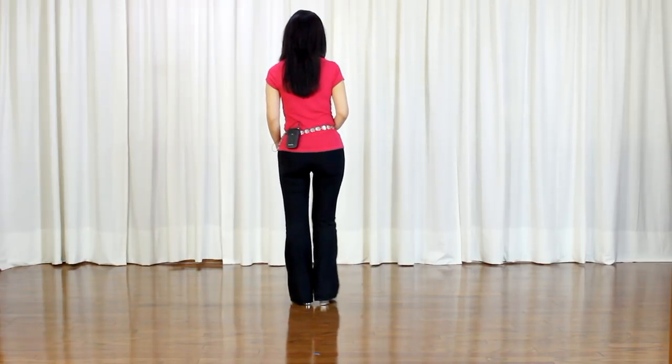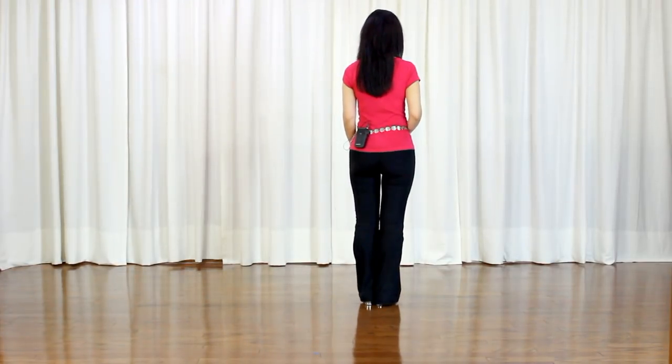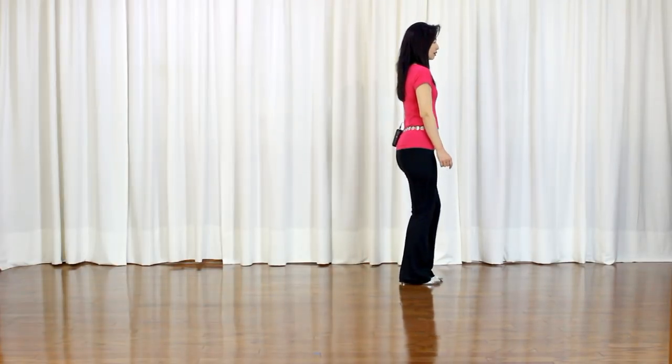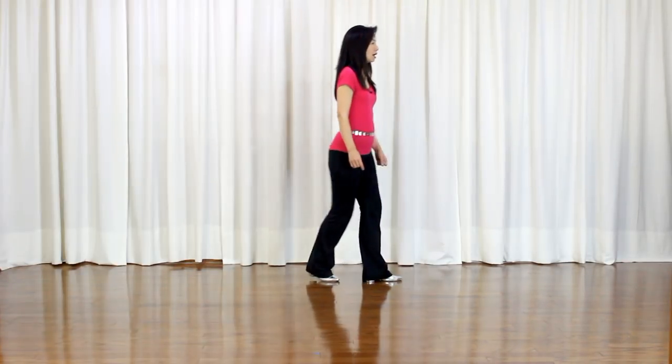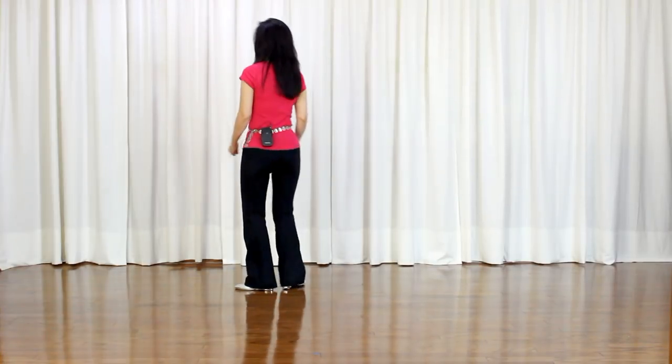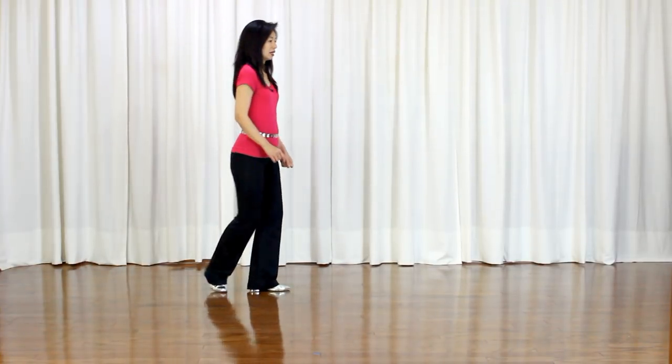Quarter turn rumba box to your right. Side, together, one eighth turn to your right, forward, facing 1:30. Now turn to 3. Side, together, back. Back, lock, back, triple full turn to your left. Steps are left, right, left, scuff.